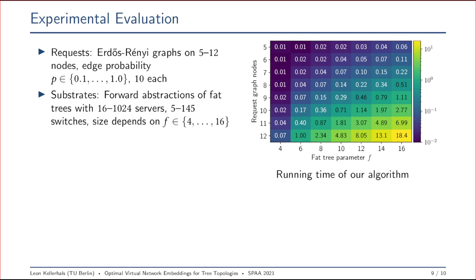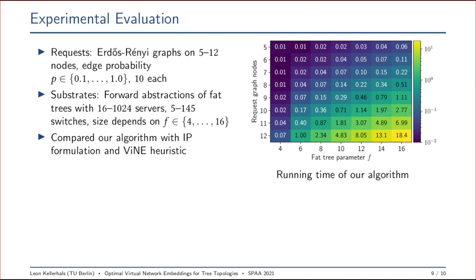We also compared our algorithm with two benchmarks within the virtual network embedding scene, namely with an IP formulation as well as the VINE heuristic. Here, the VINE heuristic first computes an LP relaxation of the problem and then gives multiple attempts of resolving the fractional solution by randomized rounding and outputs the best solution found. Both the LP relaxation as well as the IP are run with Gurobi.